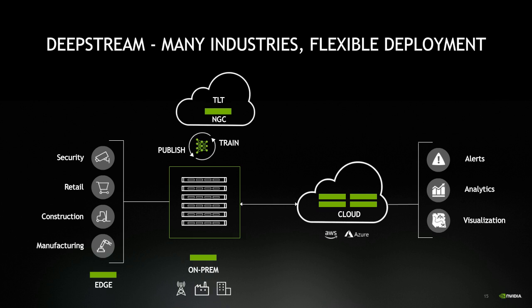Some applications require processing on the edge — on an edge device like NVIDIA Jetson, or on on-prem servers like NVIDIA EGX with T4. Use cases span security from small businesses to airports and shopping malls, retail for understanding customer behavior and automating checkout, construction sites for monitoring worker safety, and manufacturing for detecting defects too tiny for humans to spot. DeepStream offers the streaming and analytics toolkit to efficiently process and understand video across all these industries.